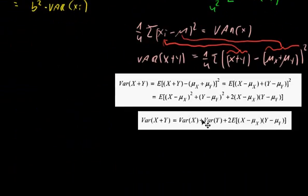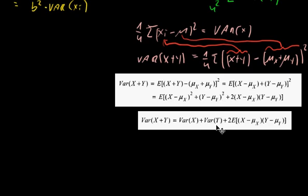Nothing else happens here. If you take the expected value here, expected value here, and expected value here — you have the definition of variance of X, the definition of variance of Y, and this expression here, which is the covariance.